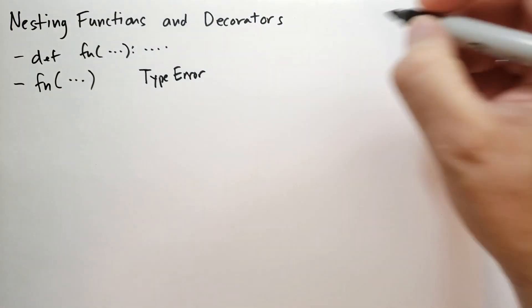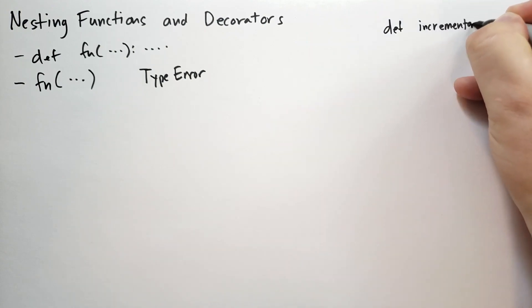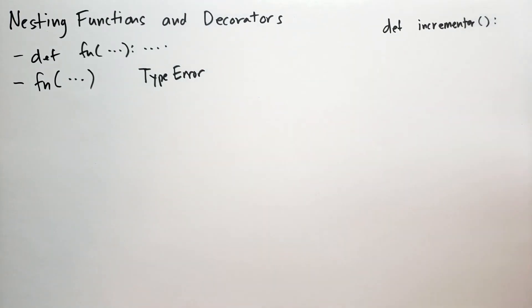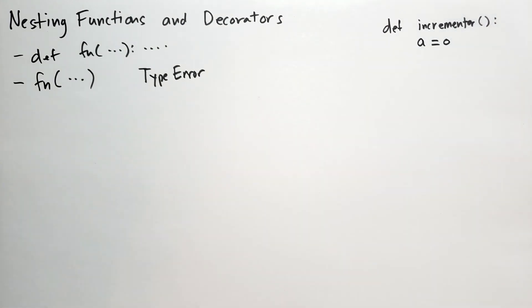So I'm going to give you an example here. We're going to write a function called def incrementor. And incrementor doesn't take any parameters. In the function body, we're going to have a equals zero.